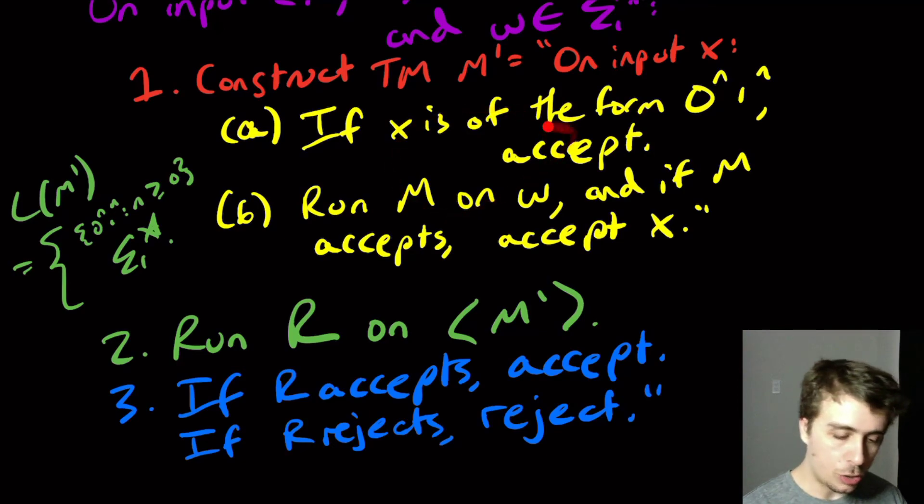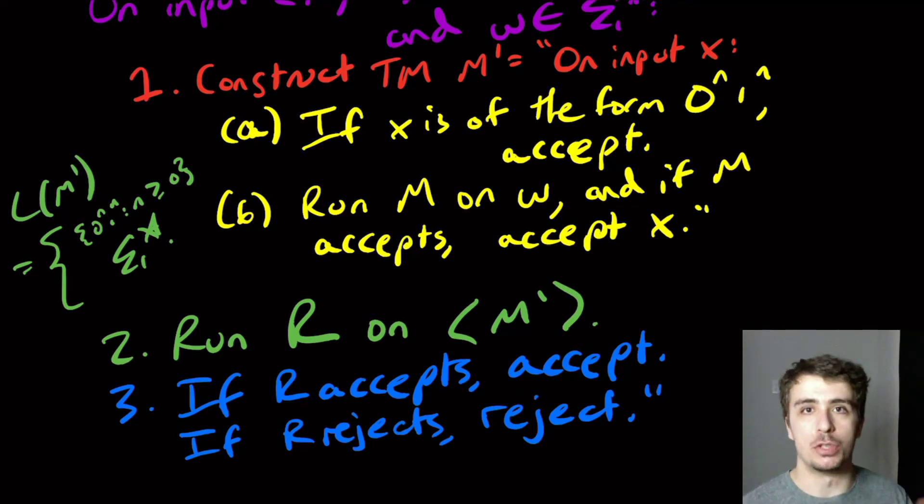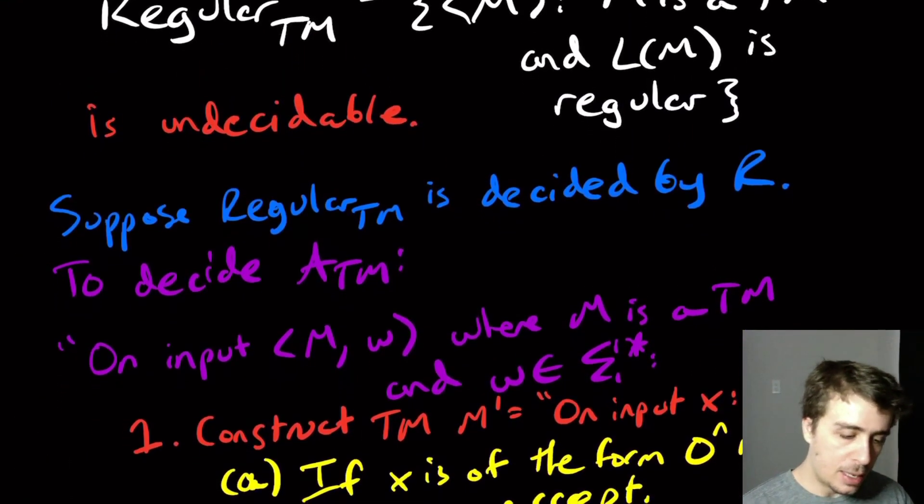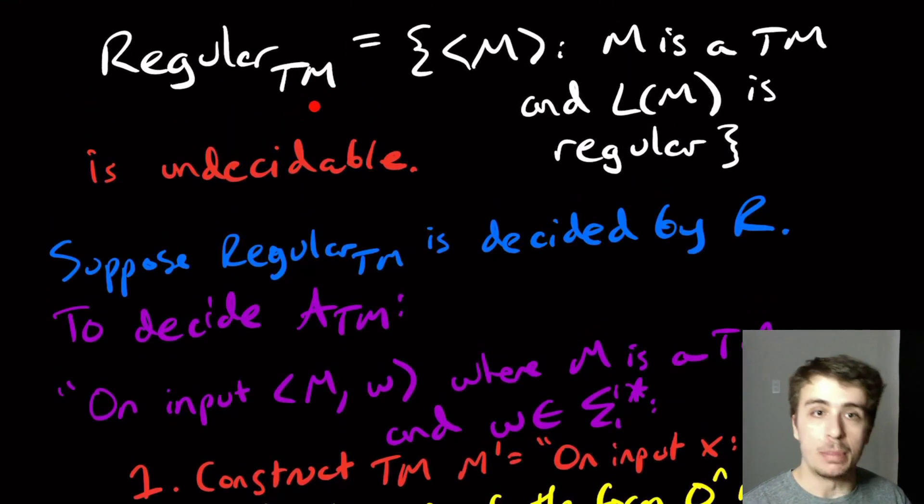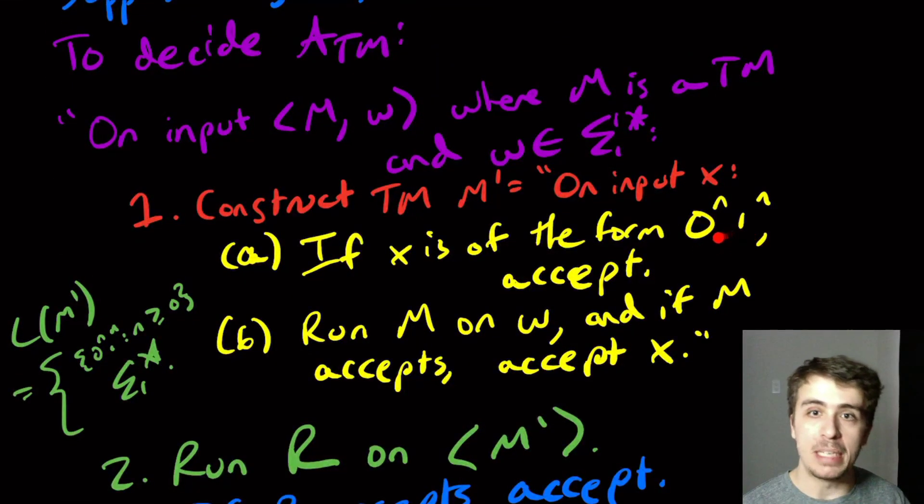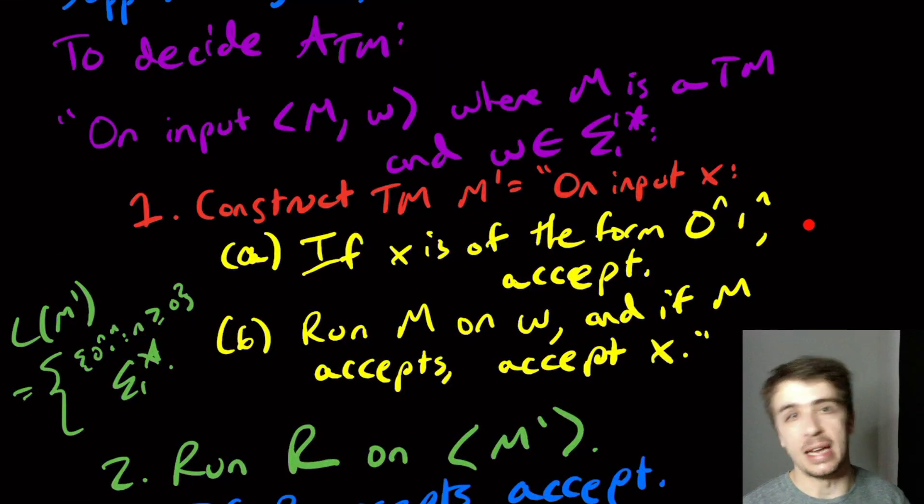You could alter this machine in innumerable ways and have these be the opposite if you wanted to. There are many ways of doing it, but this is the main way. You can also show that the problem of checking whether a Turing machine's language is context-free is not decidable either, because you can just change this to be 0^n 1^n 2^n.